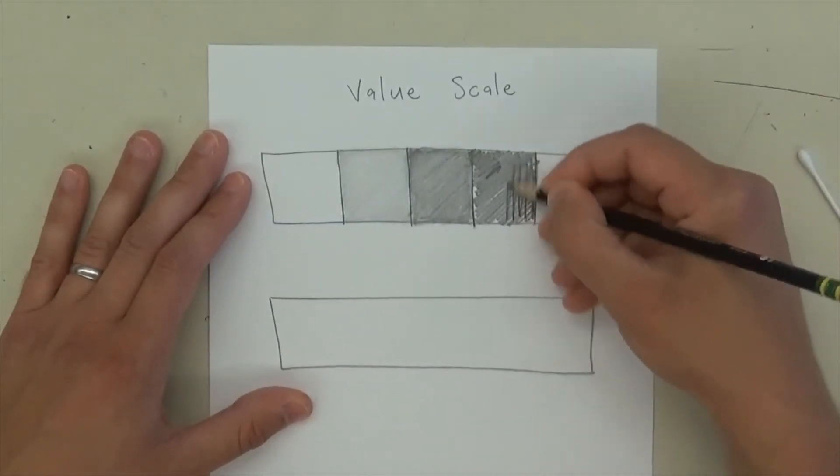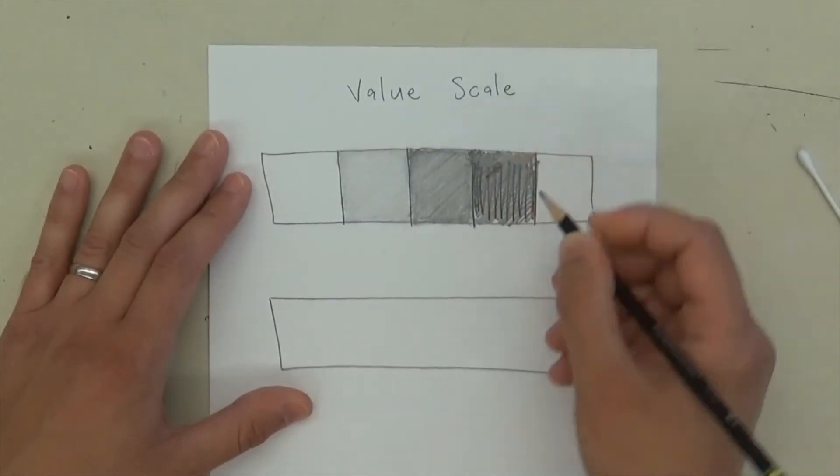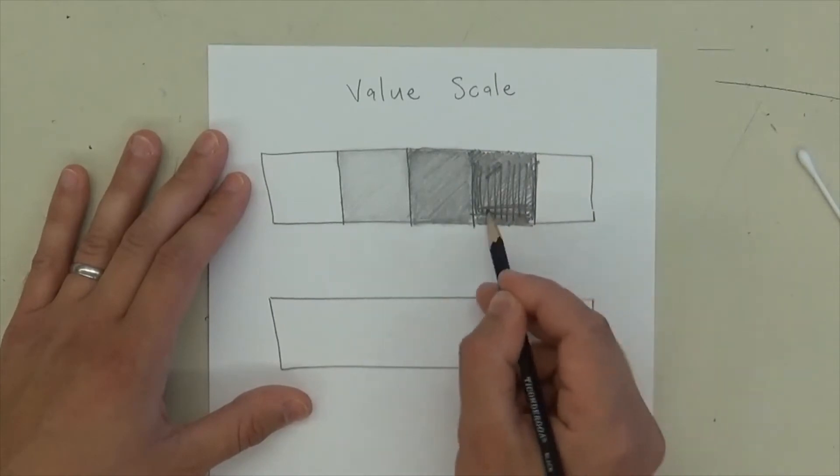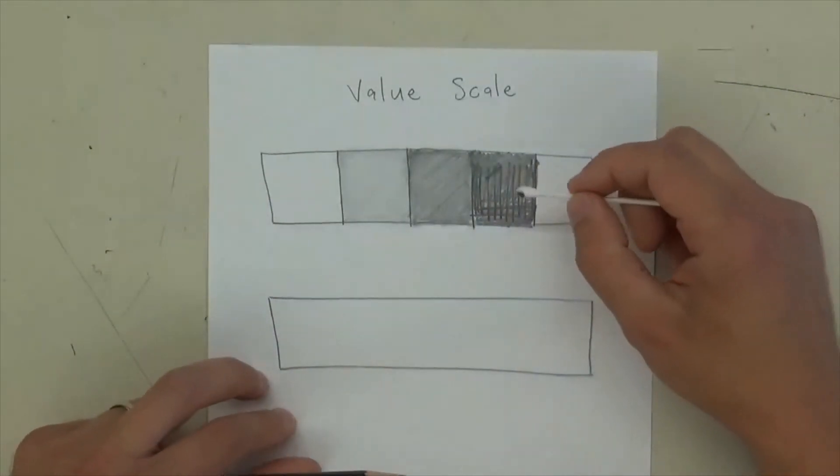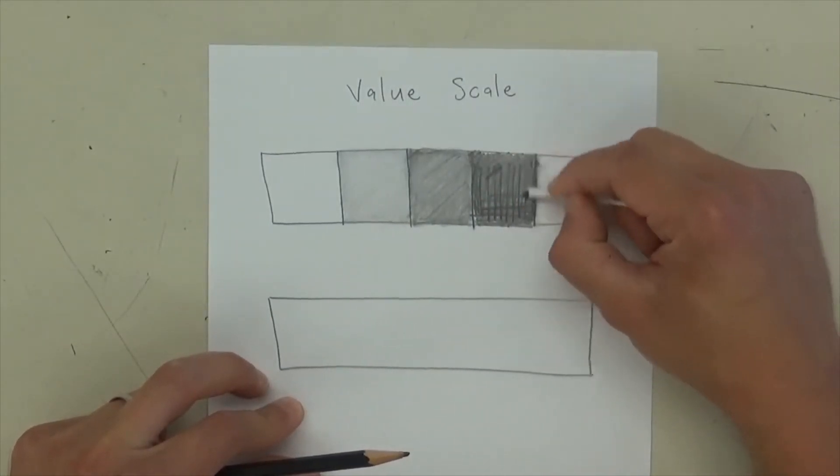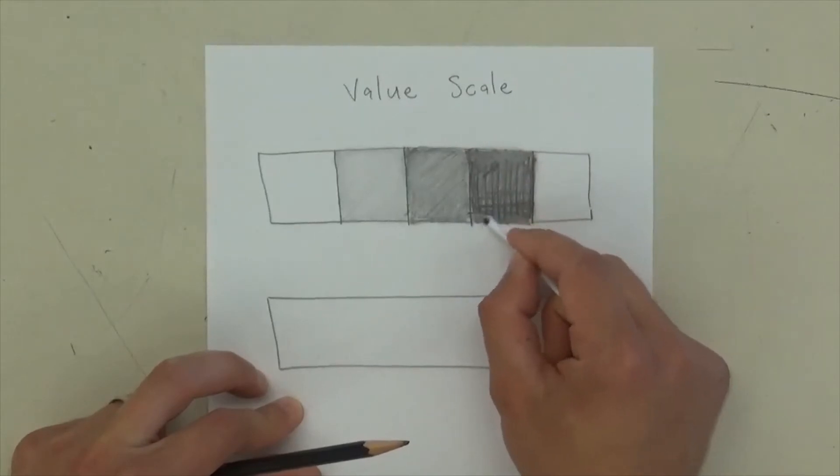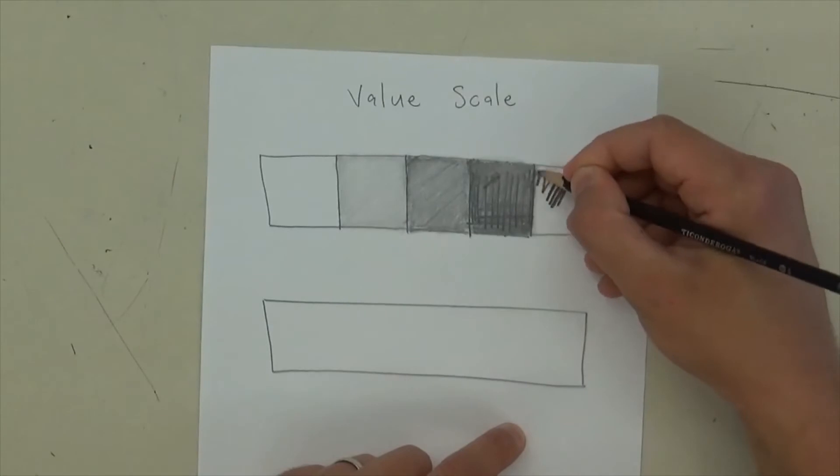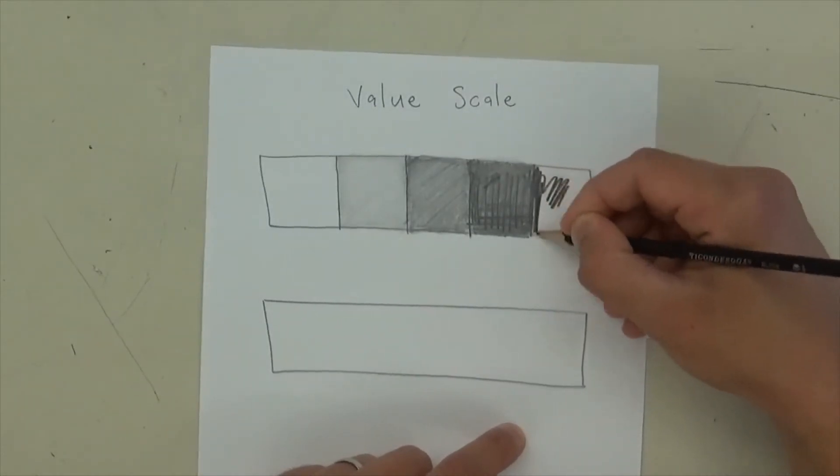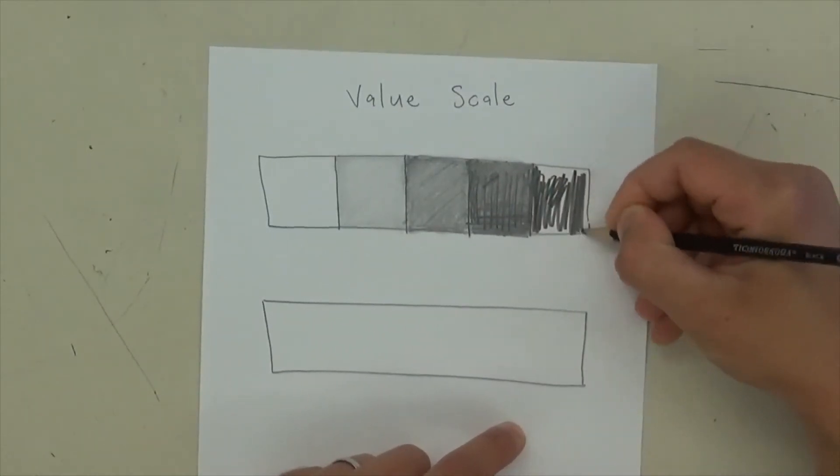But I'm still going to go right to the edges. And I'm not pushing down as hard as I can, because I've got to save that for the end. But there we go. And then I'm going to blend it again. And at the very end, I'm just going to push down as hard as I can to do it. So as hard as you can without breaking the pencil lead, that's what you should do.